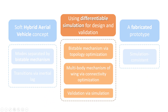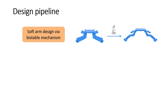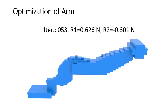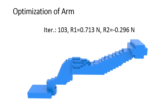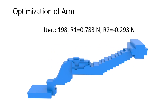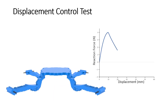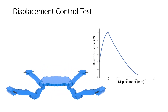We introduce our design pipeline. A non-linear elastic topology is first optimized to obtain bistability. The arm density field and the evolution of the snap-through force in each direction is shown here. Quasi-static displacement control verifies the bistability.